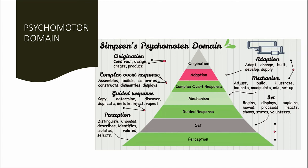Next is the psychomotor domain — called the Simpson psychomotor domain — where the base of the pyramid is formed by perception. The learner will be able to distinguish, describe, identify, isolate, and relate certain tasks or psychomotor aspects of competencies. Moving up the ladder, we reach a stage called set, where we display or explain the procedures. We then reach the guided response, where we can copy, discover, or duplicate the procedures.